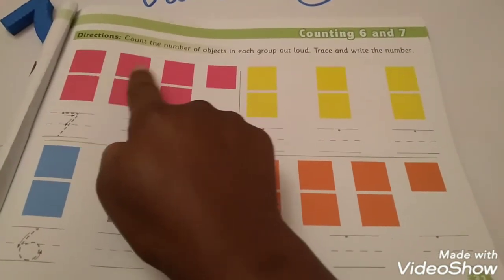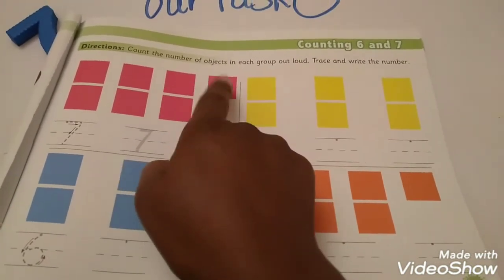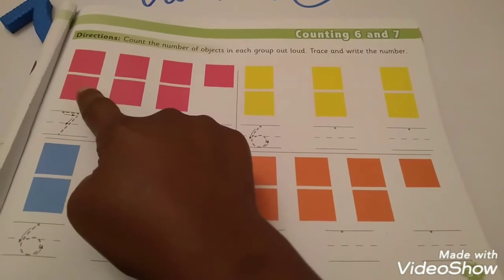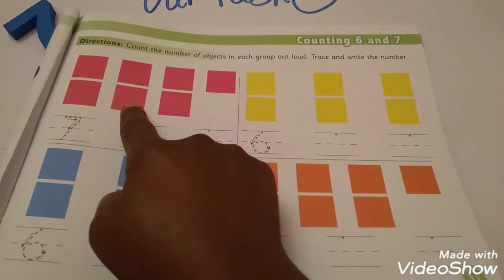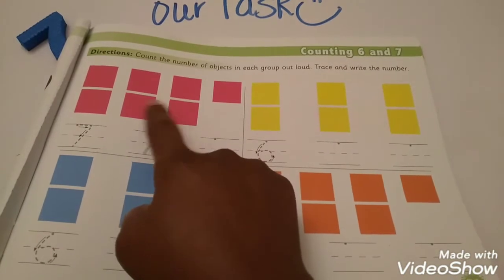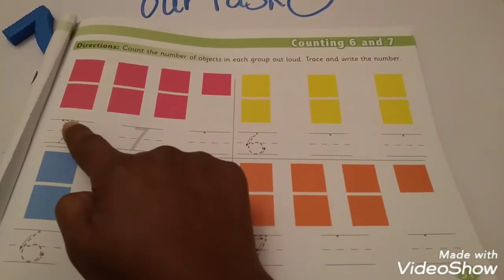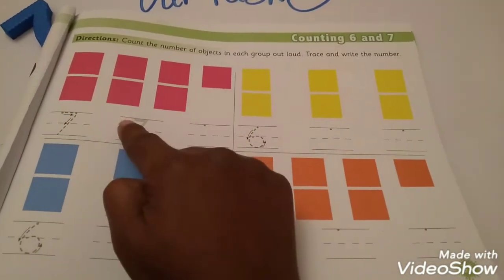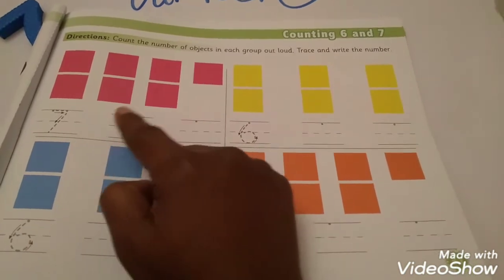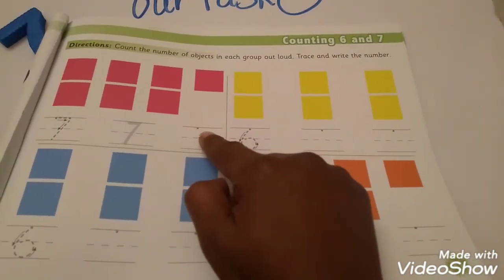1, 2, 3, 4, 5, 6, 7. So there are 7 blocks here. So we'll have to trace the number 7. Trace the number 7. Trace the number 7. And then we're going to write the number 7.